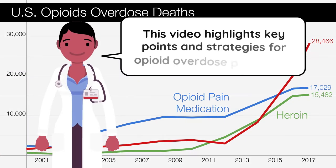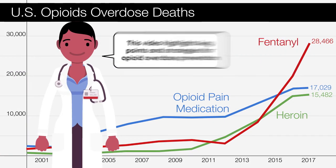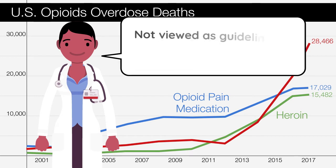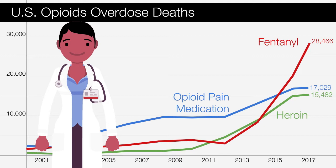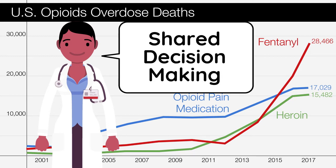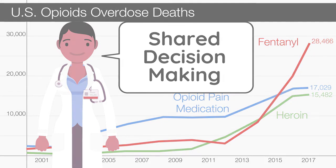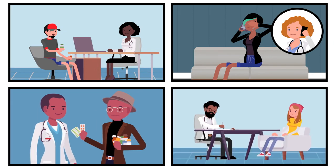This video highlights key points and strategies for opioid overdose prevention and should not be viewed as guidelines or an exhaustive review of procedures. A key to success for opioid overdose risk prevention is shared decision-making in patient-centered care, which is a dynamic give-and-take process. Discussing overdose risk prevention may be uncomfortable, but it is important and represents high-quality care.